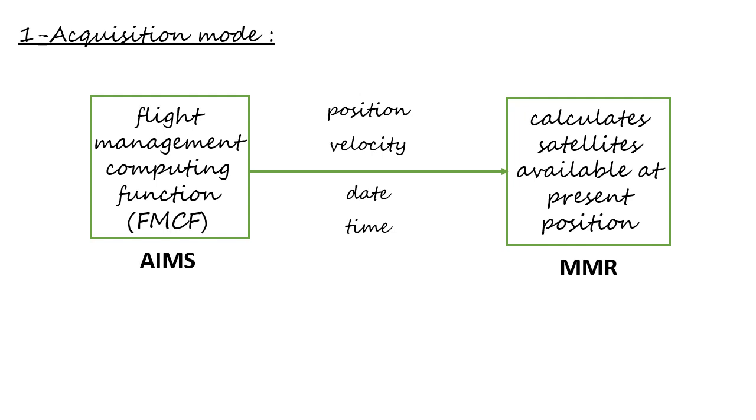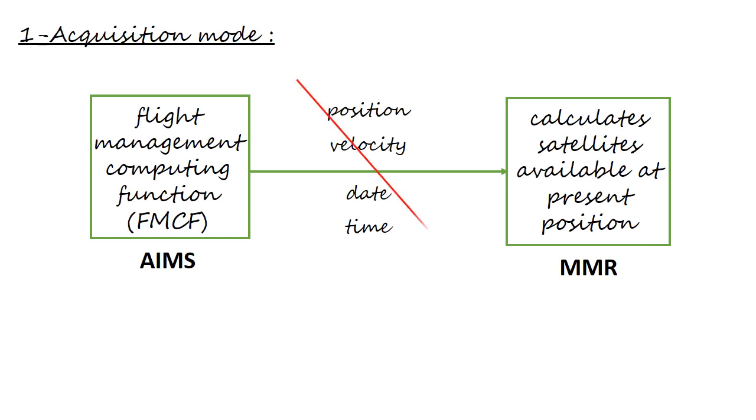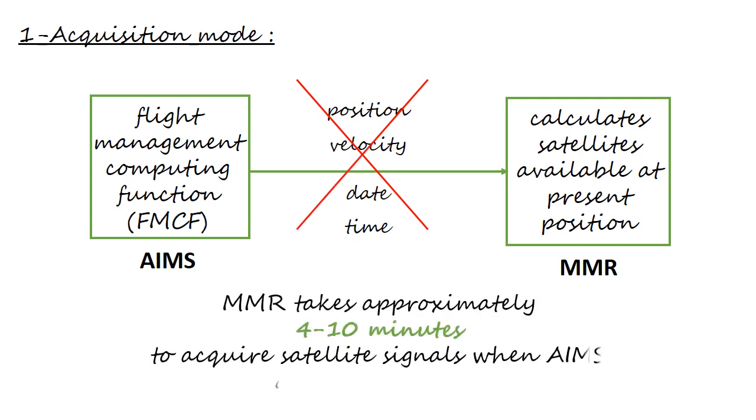When the AIMS data is available, MMR takes only 75 seconds to acquire satellite signals. In case the AIMS data is unavailable, then MMR takes approximately 4 to 10 minutes to acquire satellite signals.